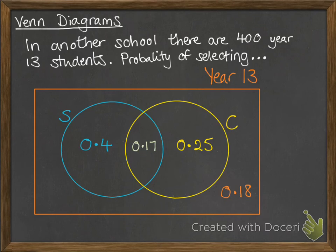From those probabilities, we can work out actual numbers. So in year 13, we were told there were 400 students in this particular school. So if we do 0.4 times 400 and 0.17 times 400, each of those probabilities times 400 will get the number of students. So the number of students that do statistics and calculus is 68. Just calculus is 100. Just statistics is 160. And neither statistics nor calculus is 72.